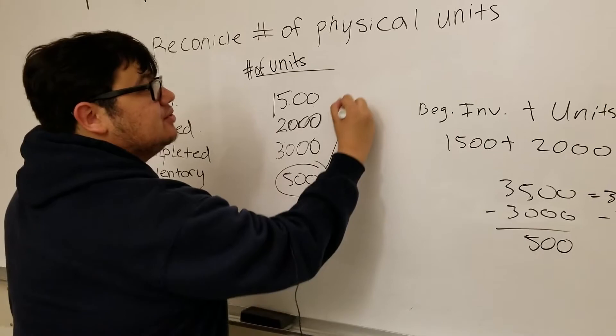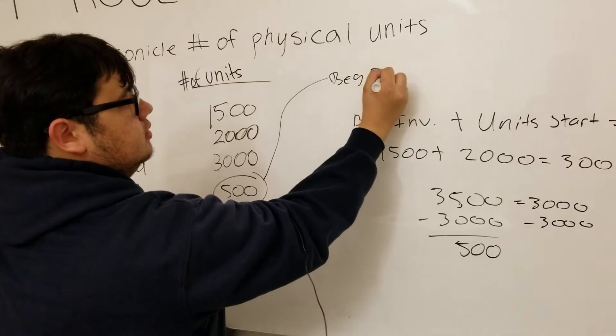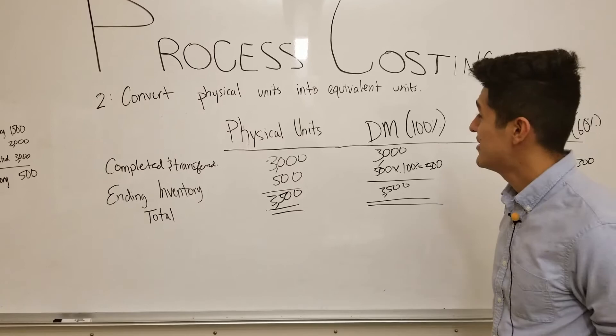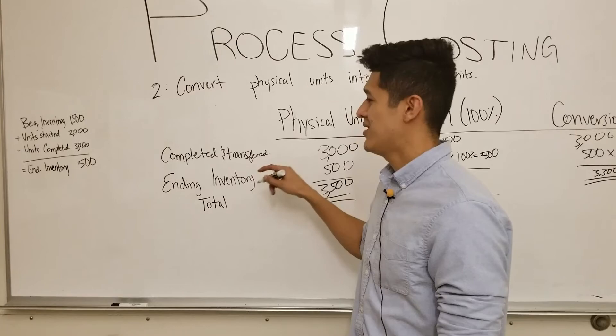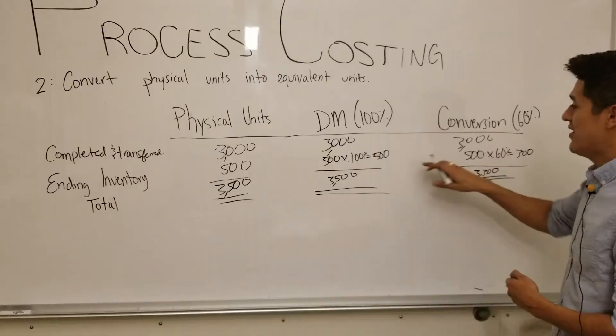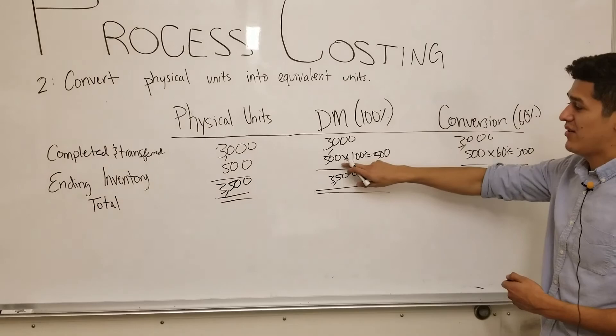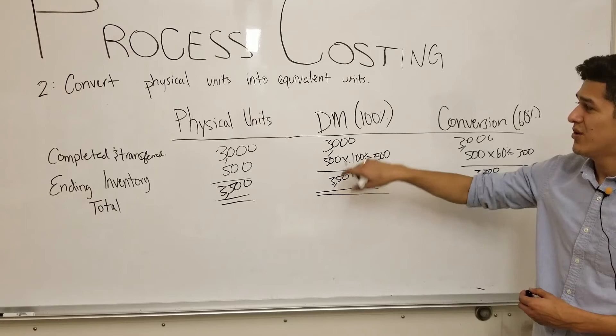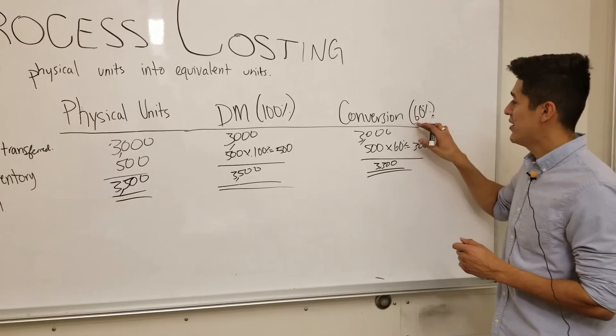The second step is to convert physical units into equivalent units. You take the completed and transferred units, which is 3,000, and the ending inventory of 500. Since the completion rate of direct materials is 100%, 500 times 100% gives us 500, which gives equivalent units of 3,500 for direct materials. Hypothetically, if the conversion rate was at 60% completion, that would give us 3,300 for total equivalent units for conversion costs.